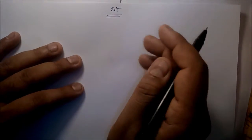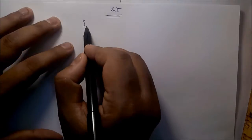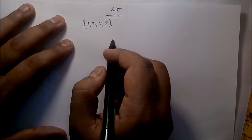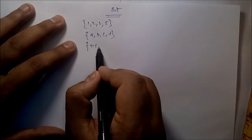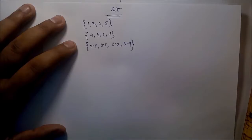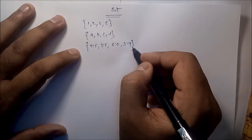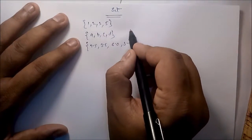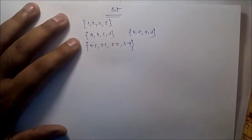A set is a data structure. Before that, we should know what a set is. All the elements in a set are distinct. Suppose we have data: 1, 2, 3, 5 — all are distinct. All elements are homogeneous, meaning they are all the same type — for example, a, b, c, d or 2.5, 3.5, 6.0, 3.9 are all floating point values. Also, the ordering of elements is not important — so a, b, c, d and b, c, a, d are the same thing.